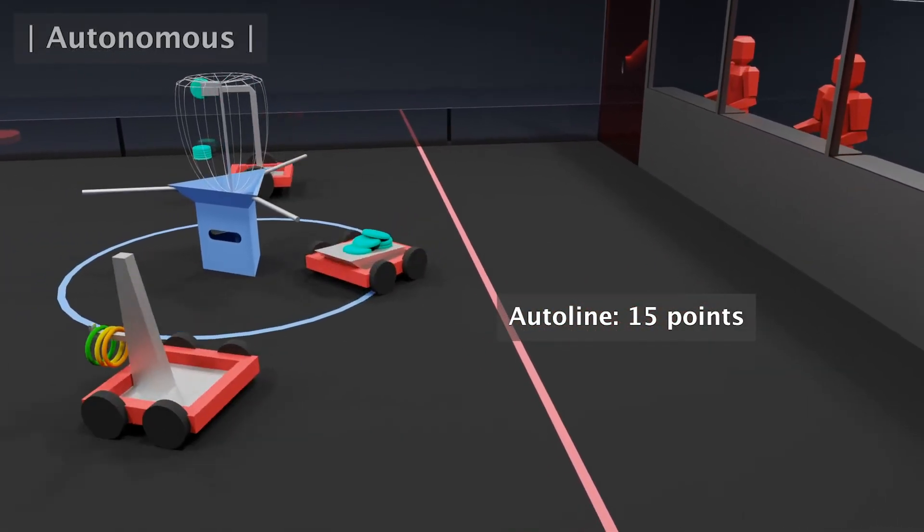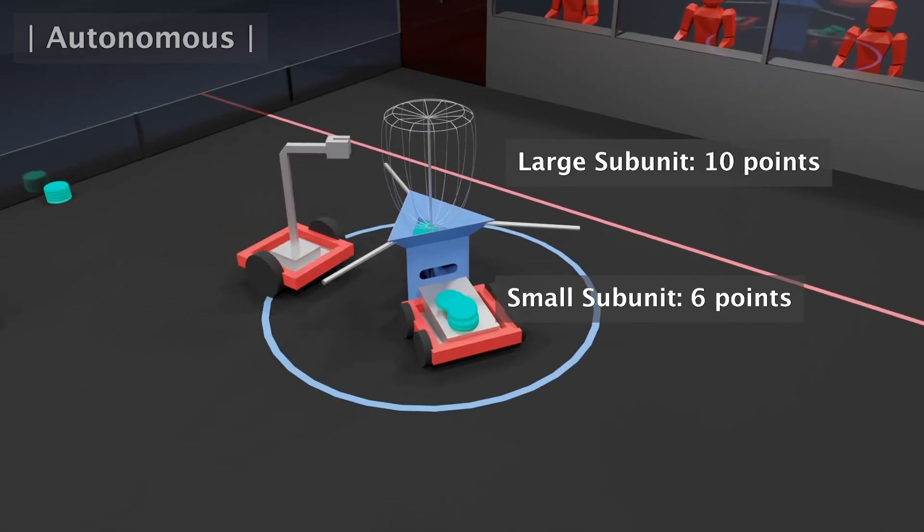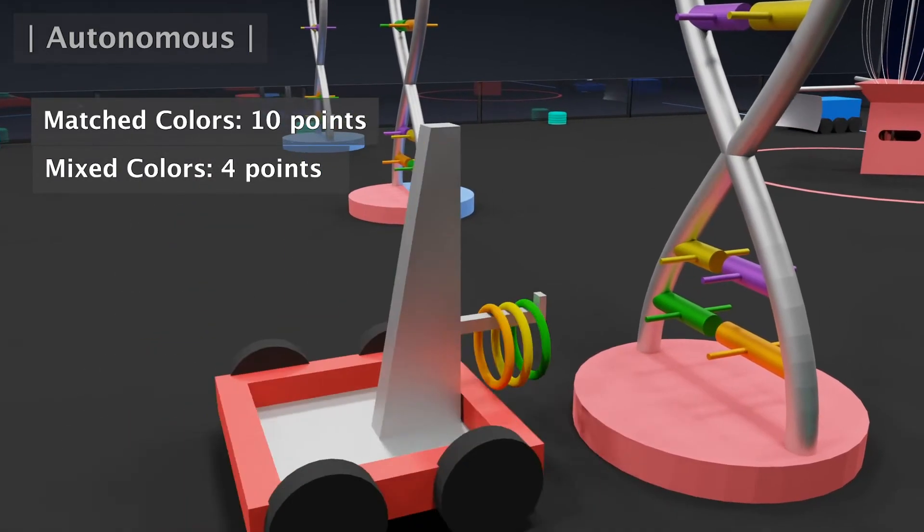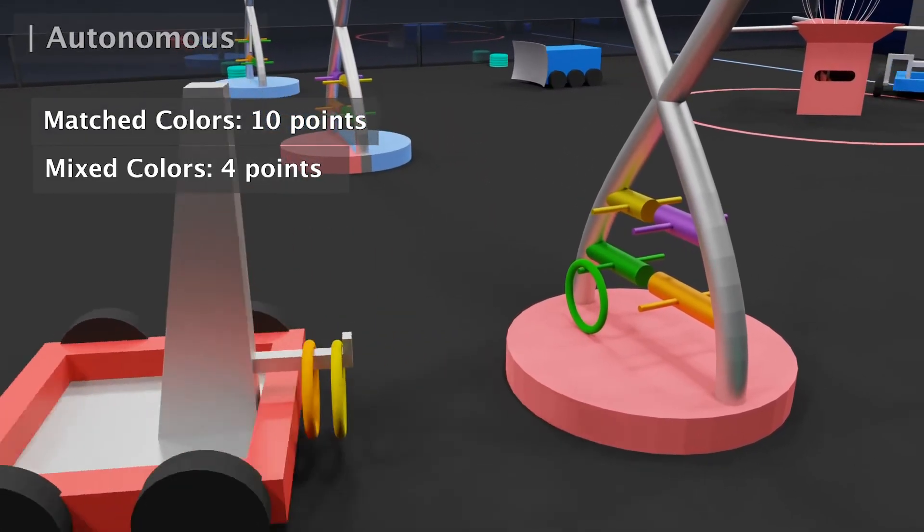During the first 15 seconds of the match, nanobots will run autonomously. Crossing the auto line, feeding aminos into ribosomes, and matching nucleotides to illuminated colors on the helices will grant points to robots.